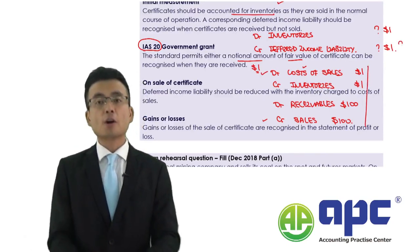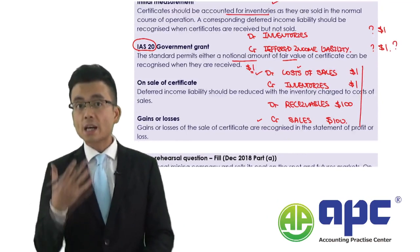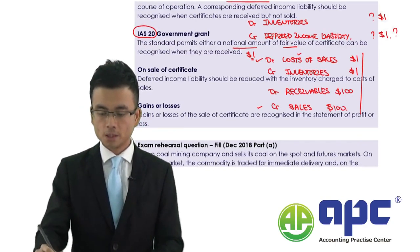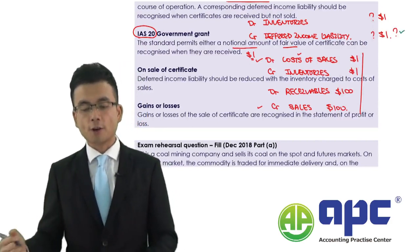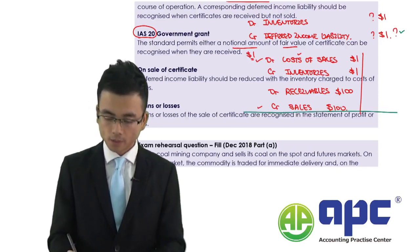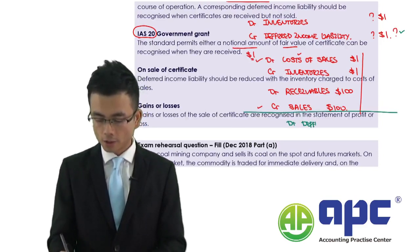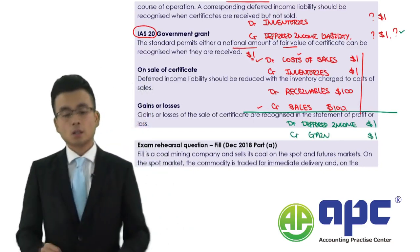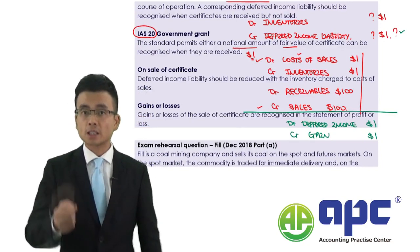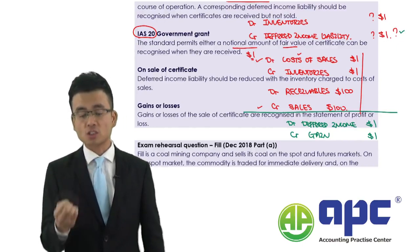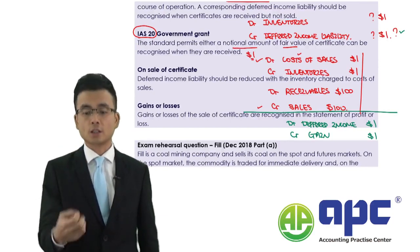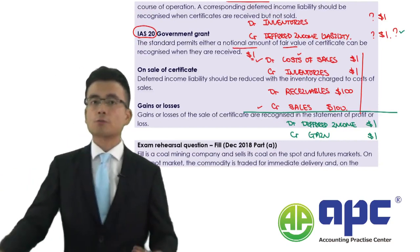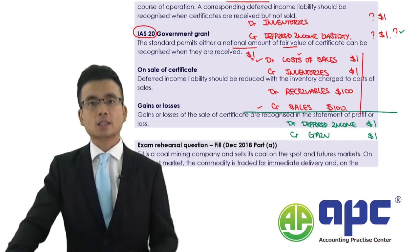How do we deal with the deferred income liability? On sale of the certificate, we recognise the deferred income liability and remove it as income. Initially we credited deferred income liability by $1 to increase it; on sale, we debit it and put that $1 as a gain in our P&L. Essentially, the government gives you a free certificate worth $1 — you can only recognise that gain when you sell it.